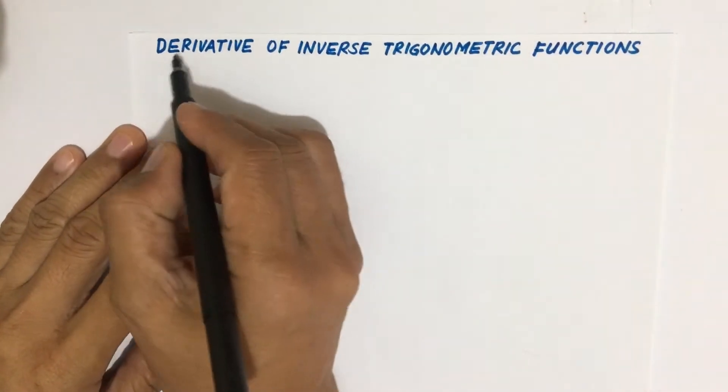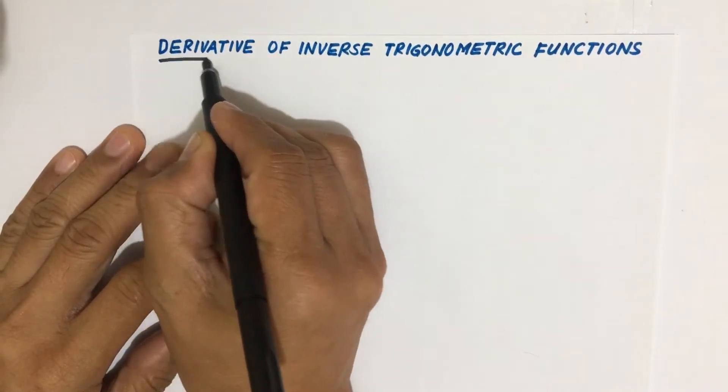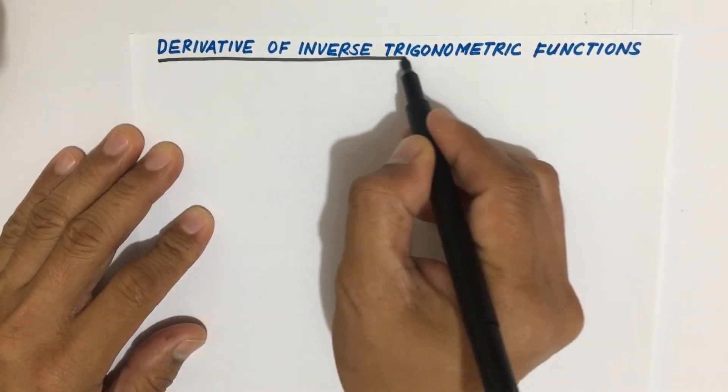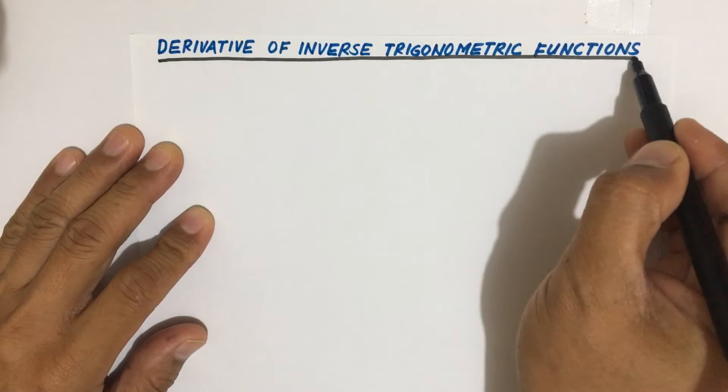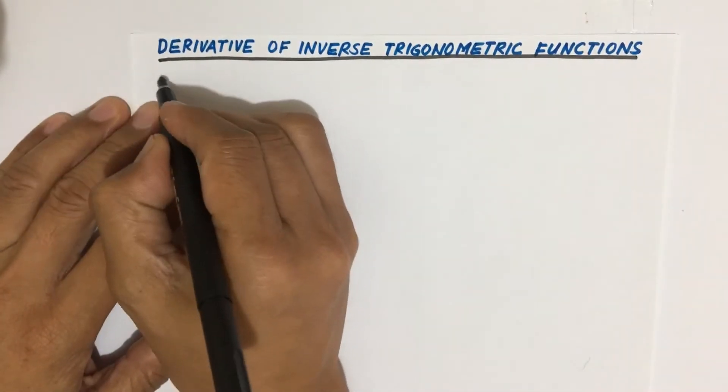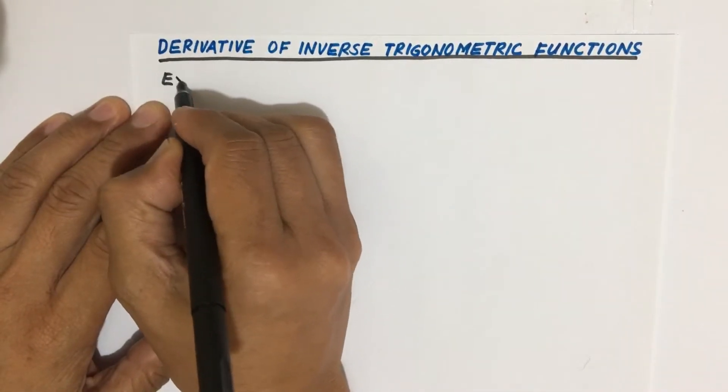Okay class, let's continue our discussion on the derivative of inverse trigonometric functions. This time we are going to solve the second example.